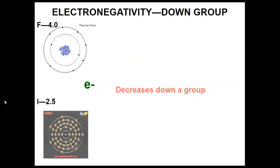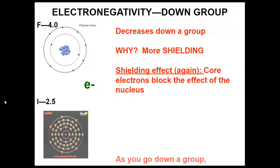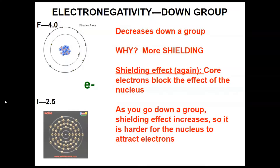As I go down a group, electronegativity decreases, and that's because there's more shielding down a group. Iodine has so many more occupied energy levels than fluorine, and all those energy levels are blocking the nucleus from being able to attract more electrons. Fluorine only has two occupied energy levels, so there's much less shielding around the nucleus and it's much easier for fluorine to attract more electrons. As the shielding effect increases, it's harder for the nucleus to attract electrons, so it has a lower electronegativity value.